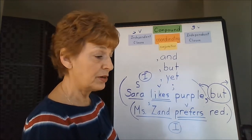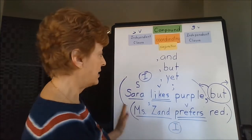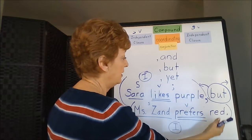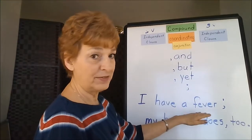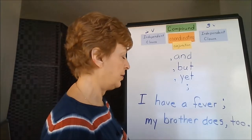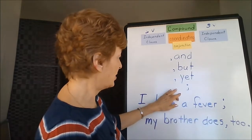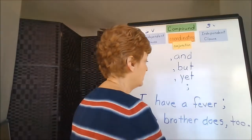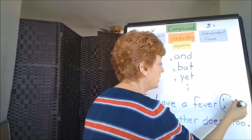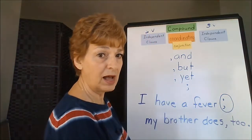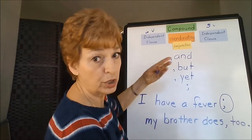It gives your brain just a split second to realize that this is one fact and that's another. In this next example, 'I have a fever. My brother does too.' Here I use the semicolon as the conjunction — this punctuation mark separating the clauses in lieu of an actual word like 'and' or 'but.'